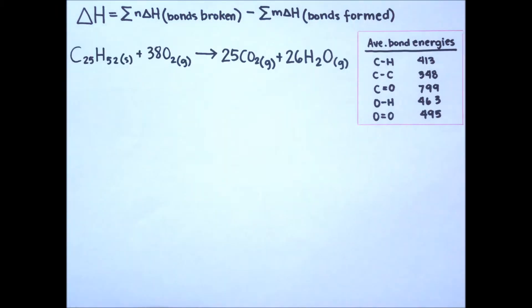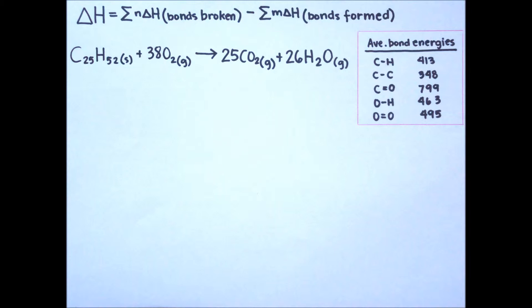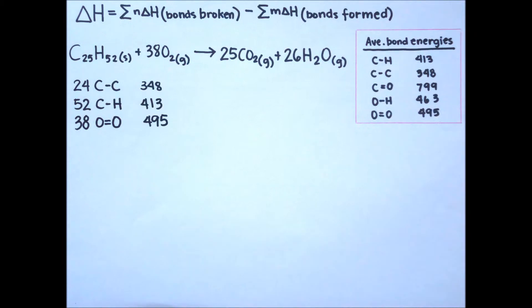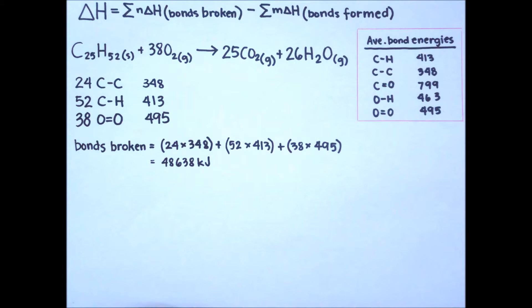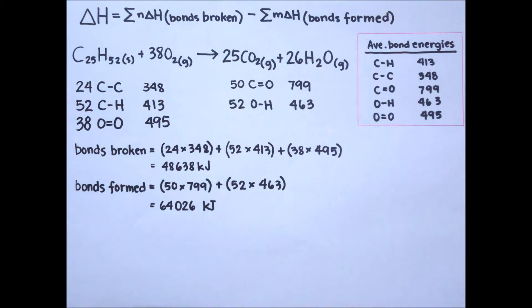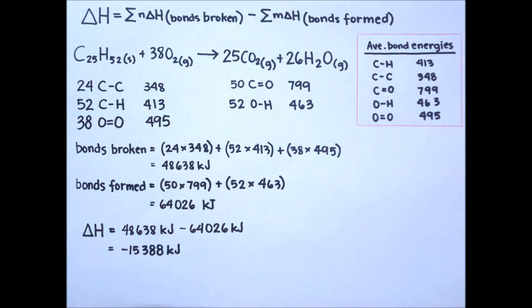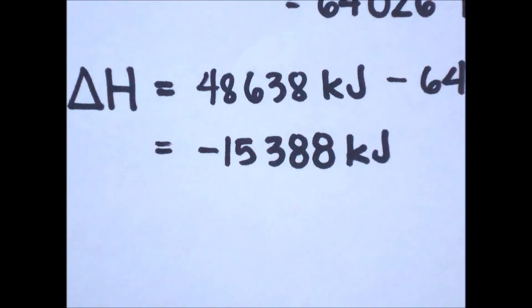Let's look at the equation for the combustion of paraffin wax and try to calculate its change in enthalpy. The bonds broken refer to the reactants, which in this case is paraffin wax and oxygen. Our paraffin wax contains 24 carbon-carbon bonds and 52 carbon-hydrogen bonds. Each oxygen molecule contains one oxygen-oxygen double bond. We multiply the number of bonds by their coefficient and the corresponding bond energy and add them all up. We do the same with the bonds formed or the products, which are carbon dioxide and steam. Then we substitute the numerical values into the equation and calculate. The change in enthalpy of the combustion of paraffin wax is negative 15,388 kJ.